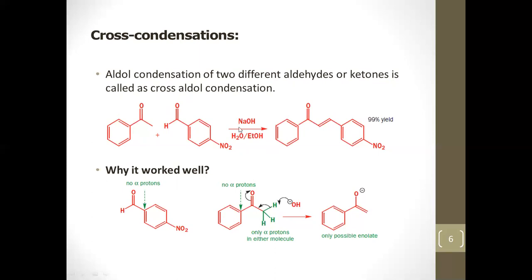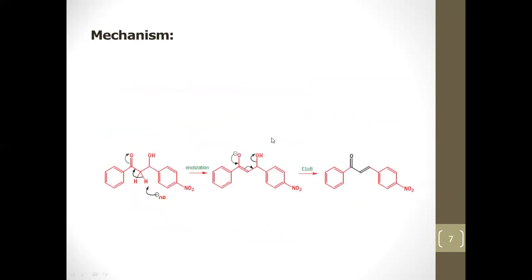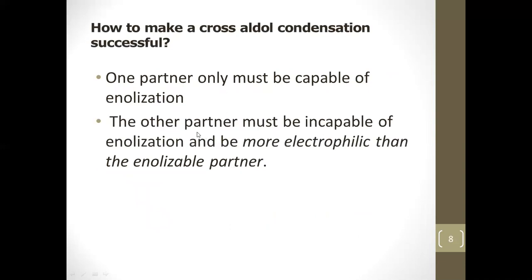Since sodium hydroxide is not a very strong base, it only enolizes some of the ketone. The unenolized ketone could also react with the enolate, but the nitro group at the para position is deactivating — it snatches electron density from the carbonyl, making it much more electrophilic than the ketone's carbonyl. This ensures the enolate attacks the aldehyde preferentially, giving a single clean product. If both carbonyls were equally electrophilic, other strategies would be needed.